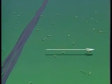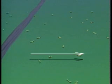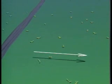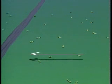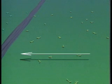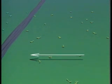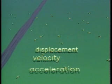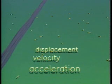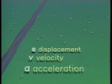A quantity that has both magnitude and direction is a vector, represented by an arrow. The arrow's direction is the direction of the quantity, and the length of the arrow indicates its magnitude. Displacement, velocity, and acceleration are all vectors. In equations, vectors are written in boldface.